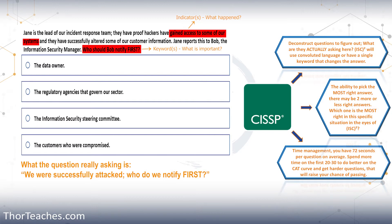Another way to think through the question is: if we can only implement or do one thing, what would best solve the problem? In this case, if you can only notify one person, one agency, one whatever — which one should you choose? Again, we get the same answer: the data owner. But it can, in some cases, help you argue with yourself. This is a better answer because if I can only pick one, then I would choose this.